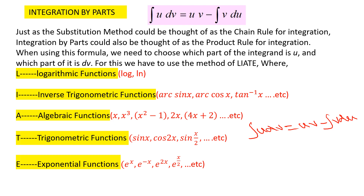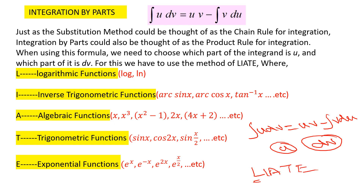When you do the integration by parts method, it is very important to know which integrand you choose as u and which you choose as dv. To select u and dv, we follow a rule called LIATE. L stands for logarithmic function, I stands for inverse trigonometric functions, A stands for algebraic functions, T stands for trigonometric functions, and E stands for exponential function.